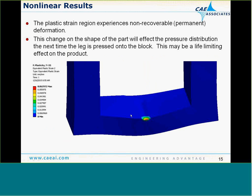If we look at the plastic strain being induced in the nonlinear model, we can see it's highly localized for that first insertion point in and around where the contact occurs. This is permanent, unrecoverable strain that will also result in permanent deformation in that area. At this point, we should consider how much permanent strain is being induced and potentially cycle the part to see how that plastic region can grow. This will help us determine the life of our product and whether it will survive a sufficient number of cycles to be adequate in the field.